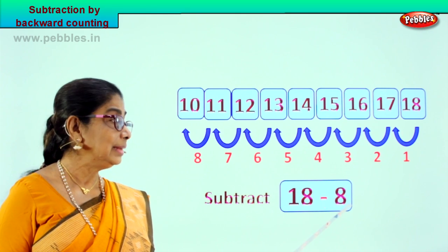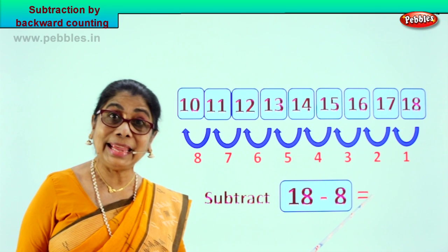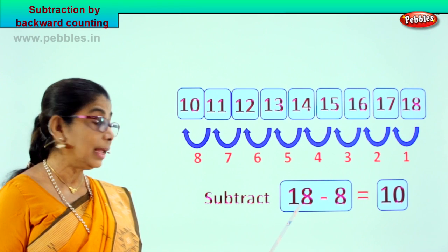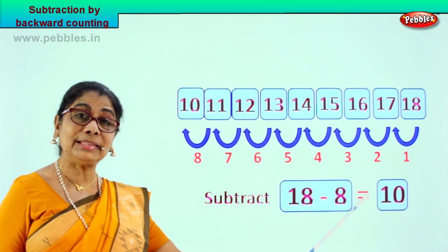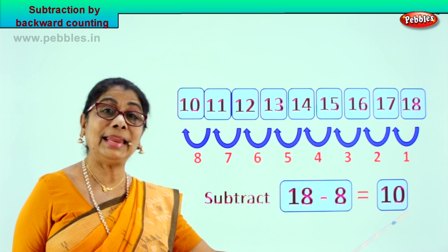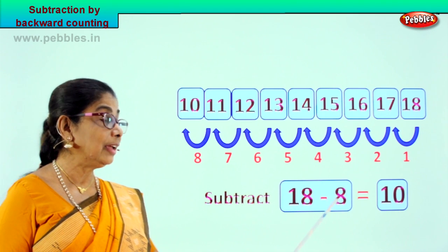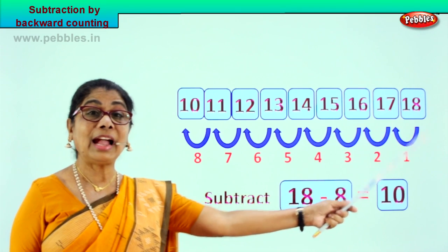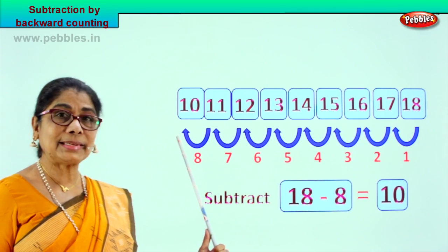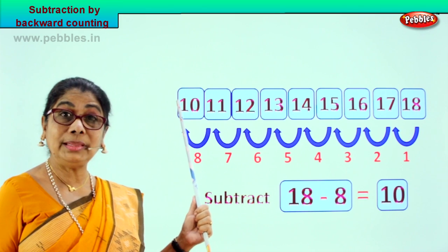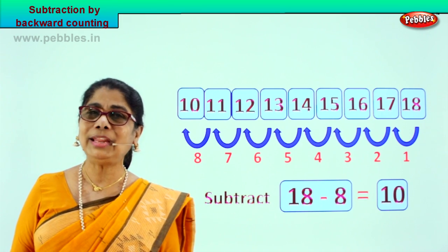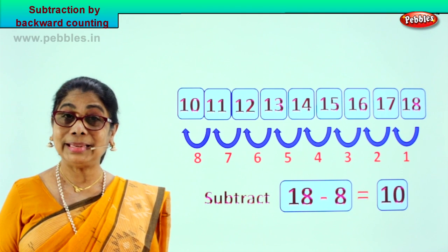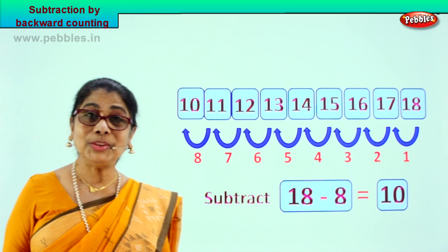18 minus 8 is equal to 10. What is 18 take away 8? Equal to 10. What did you do? From 18, counted 8 steps backward and we got the answer 10. Counting backward to get the answer in subtraction. Good. Did you enjoy the exercise?